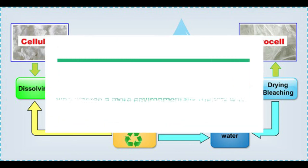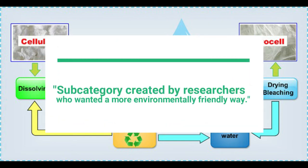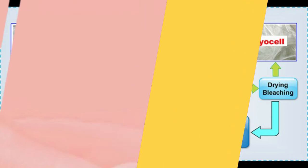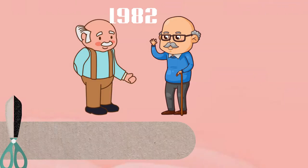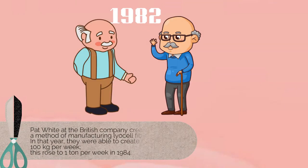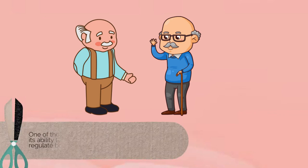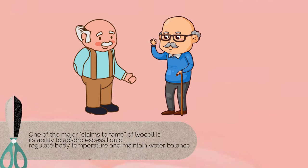Technically, lyocell is a subcategory of rayon — a subcategory created by researchers who wanted a more environmentally friendly way of creating rayon. Pat White and a British company created a method of manufacturing lyocell fiber in 1982. In that year, they were able to create up to 100 kilos per week, which rose to 1 ton per week in 1984.